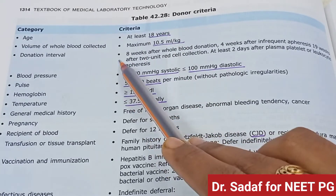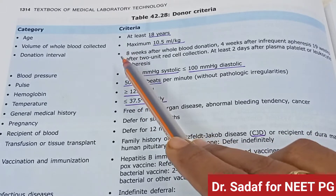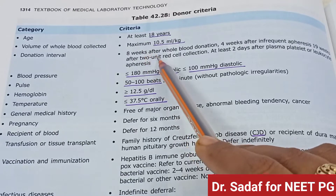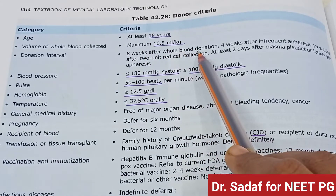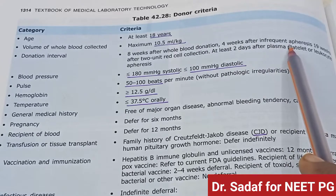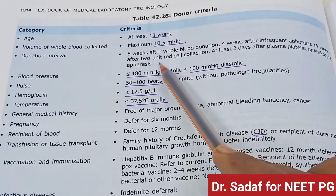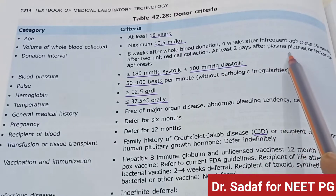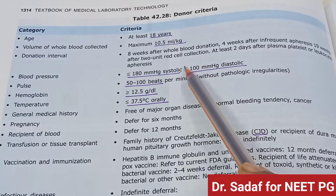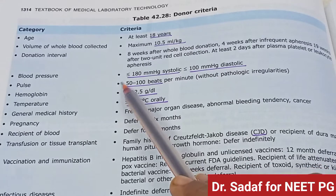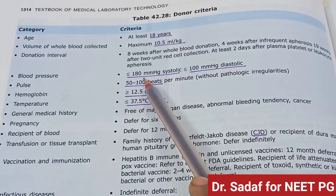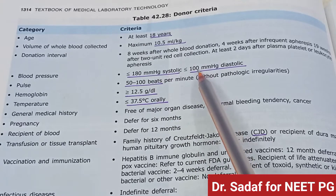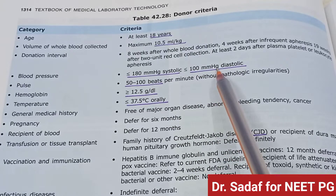Donation interval: 4 weeks after infrequent apheresis, 16 weeks after 2-unit red cell collection, and at least 2 days after plasma, platelet, or leukocyte apheresis. Blood pressure: systolic equal to or less than 180 mmHg, and diastolic equal to or less than 100 mmHg.